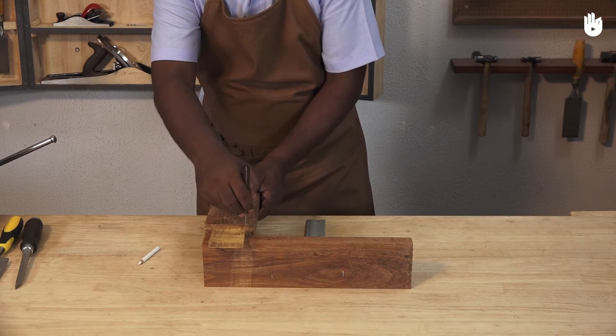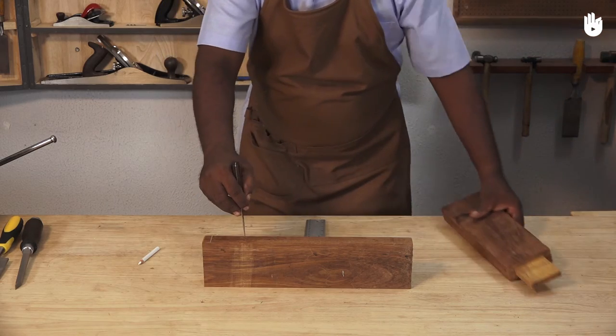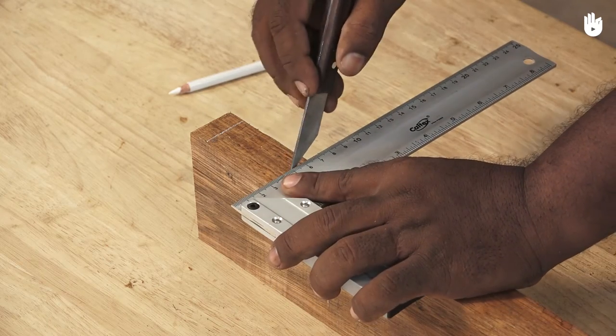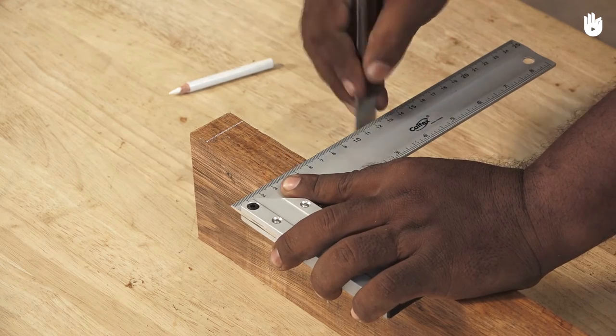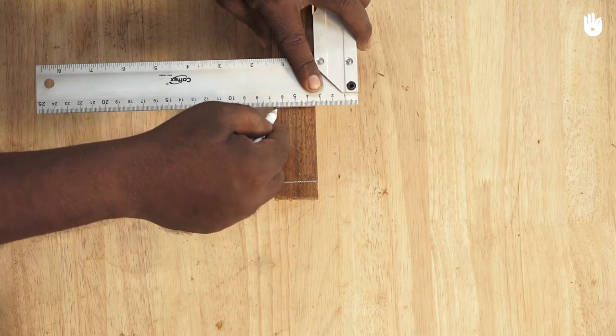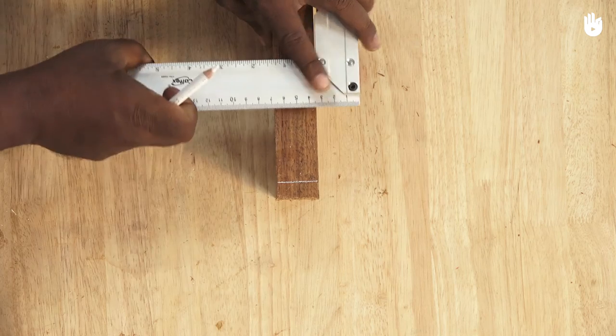Before you start chiseling, ensure that the layout is precise. Use a marking knife along the sides of the tenon piece to mark the length of the mortise. Highlight the marks using a pencil and a tri-square.